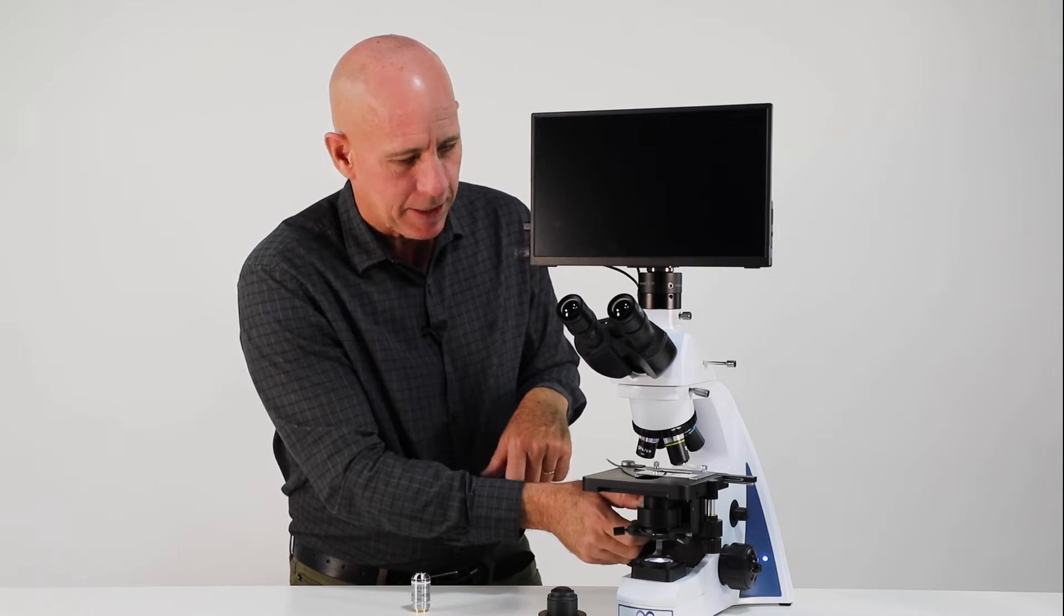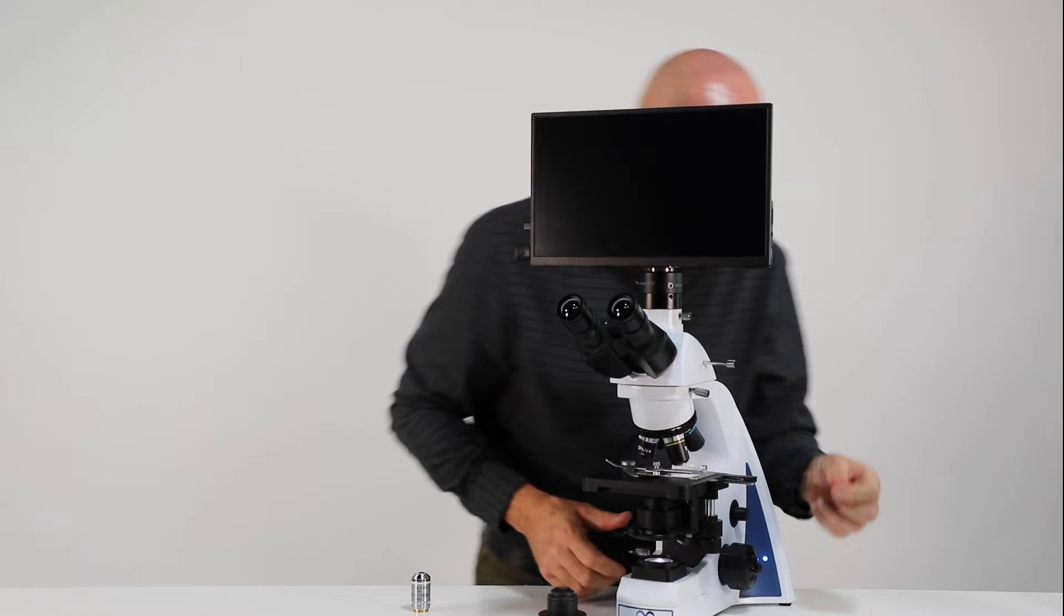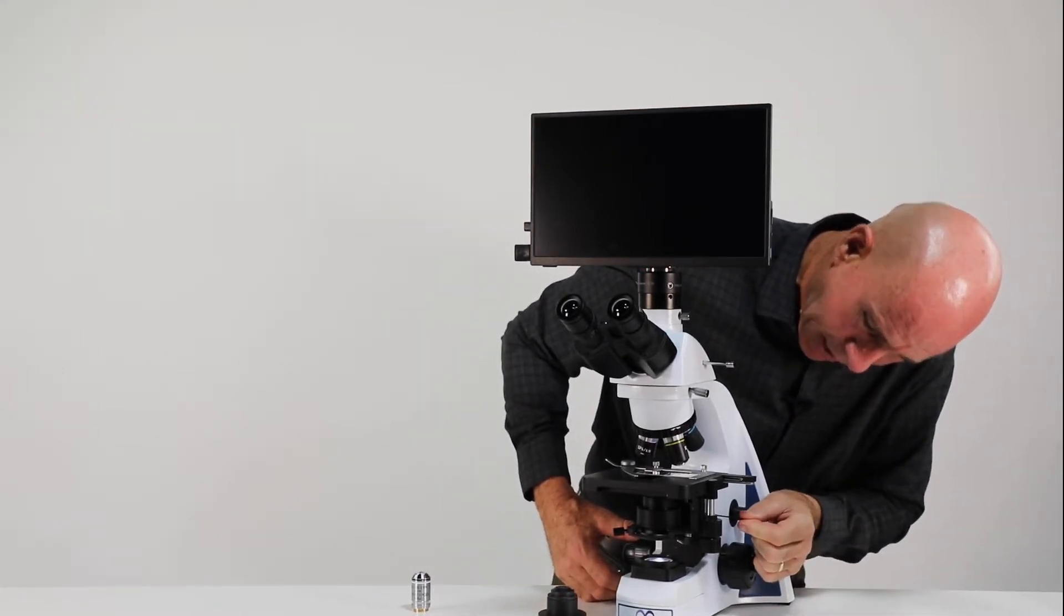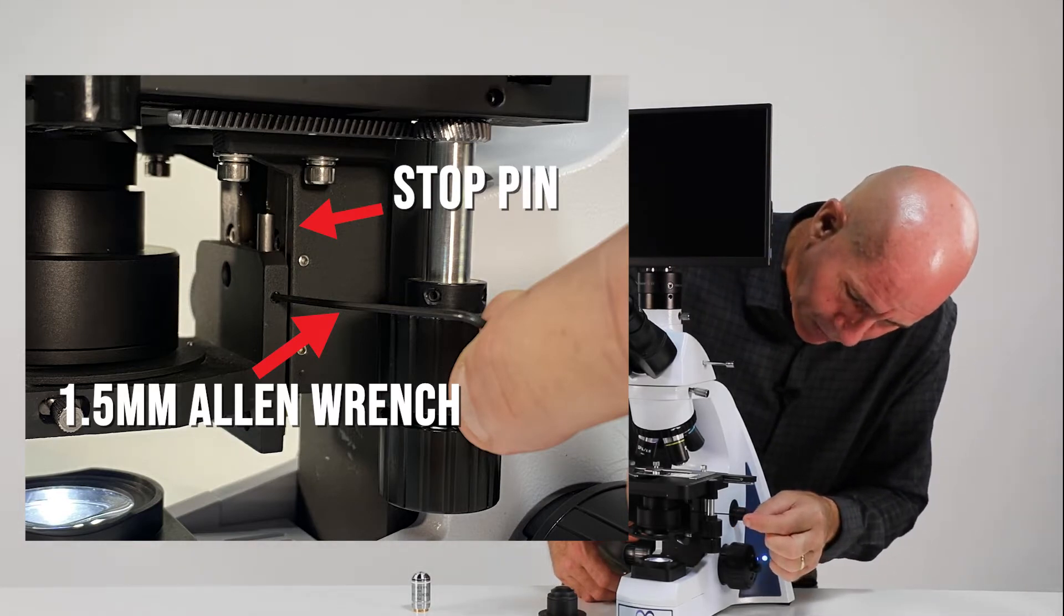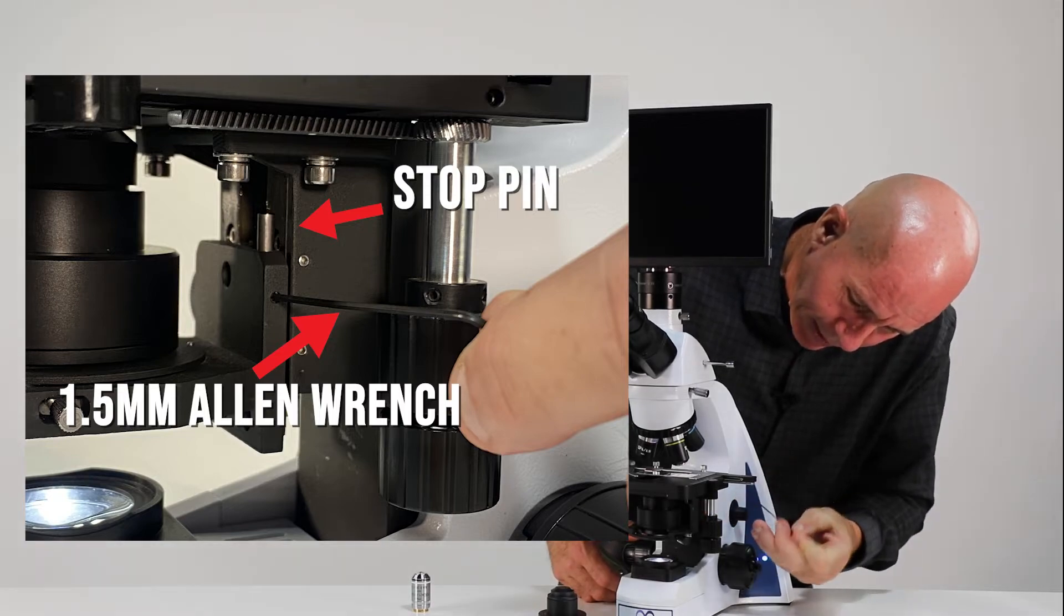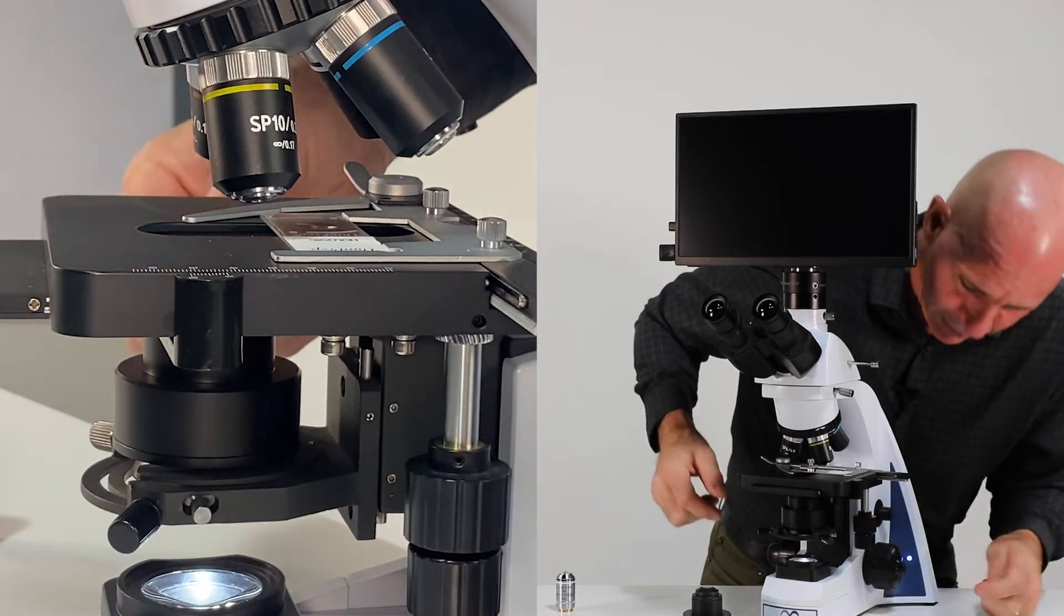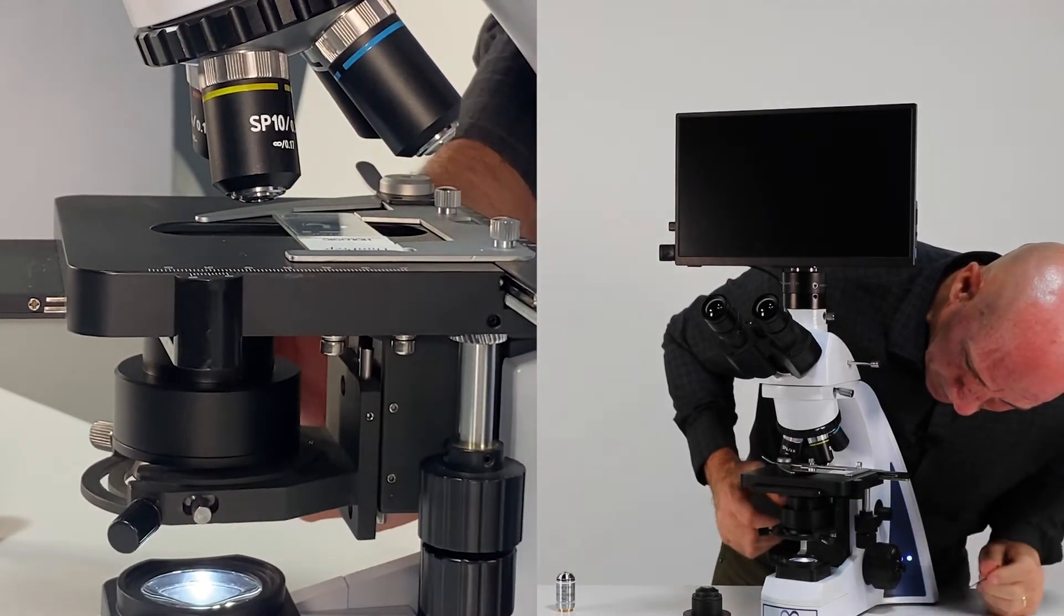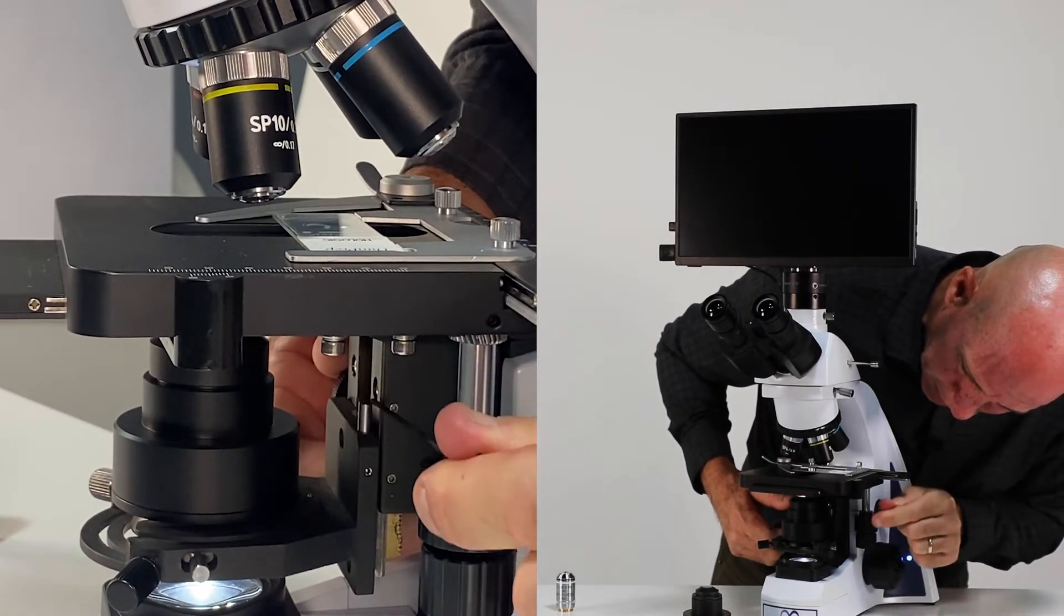But when you first set it up, you may have to make an adjustment. And it's a little tricky, a little tedious. It's a very small allen wrench. It's a 1.5 millimeter allen wrench that we're going to use. And this little bitty pin right there, let me move this so you can see it. Again, remember we have oil here, you have to be careful as you're moving around. So this little pin right there, I'm going to bring this down.